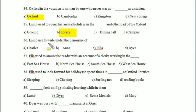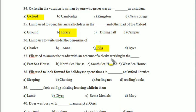Lamb used to write under the pen name Elia. Elia tried to amuse the reader with an account of a clerk working in the — East Sea House, North Sea House, South Sea House, or West Sea House? Your answer is 'South Sea House.'